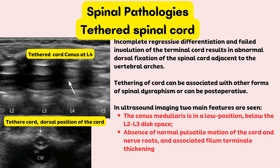Now let's look at some common spinal pathologies. Cord tethering is an incomplete regressive differentiation and failed involution of the terminal cord, resulting in abnormal dorsal fixation of the spinal cord adjacent to the vertebral arches. Tethering of the cord can be associated with other forms of spinal dysraphism or can be postoperative. On ultrasound imaging, two main features are seen: the conus medullaris is in a low position below the L2-L3 disc space, with absence of normal pulsatile motion of the cord and nerve roots, and associated filum terminale thickening.